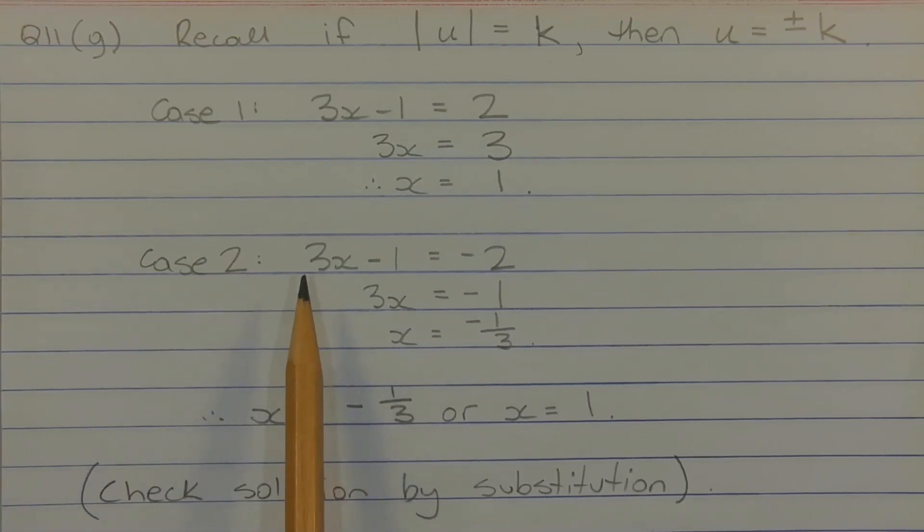Or in the second case, 3x minus 1 equals negative 2. Adding 1 to both sides of the equation, we get 3x equals negative 1. Dividing both sides by 3, we get x equals negative 1 over 3.